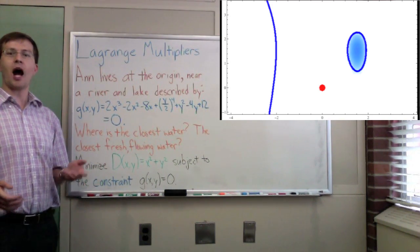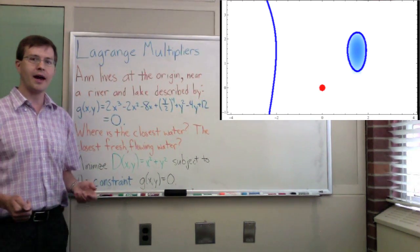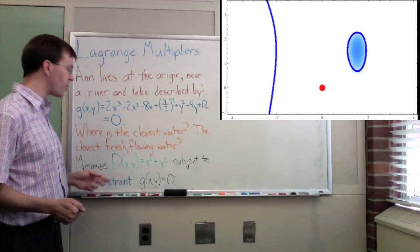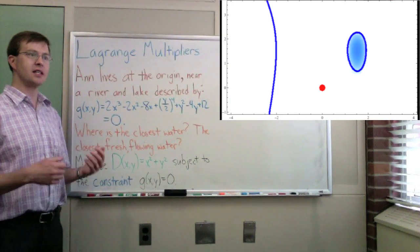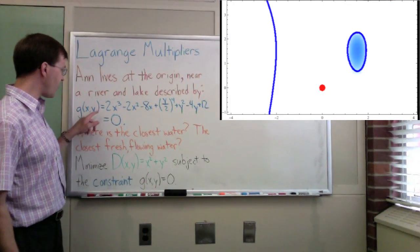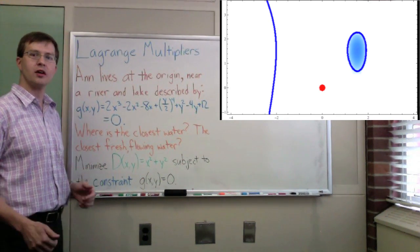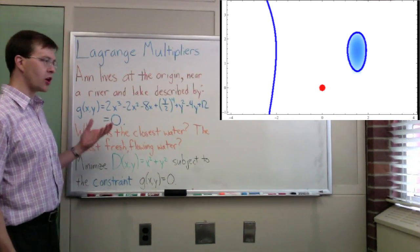The idea is that this is an optimization problem like so many problems in calculus are. And it's an optimization problem where we want to minimize the distance subject to a constraint. The constraint is that this function g of xy equals zero. The point xy that we choose will be the point where she goes to get the water.